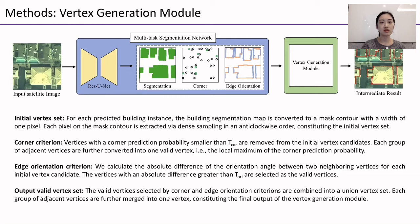For the edge orientation criterion, we calculate the absolute difference of the orientation angle between two neighboring vertices for each initial vertex candidate. Vertices with an absolute difference greater than a user-defined threshold are selected as valid vertices. Finally, the valid vertices selected from the corner criterion and the edge orientation criterion are combined into a union vertex set. Each group of adjacent vertices is further merged into one vertex, constituting the final output of the vertex generation module.